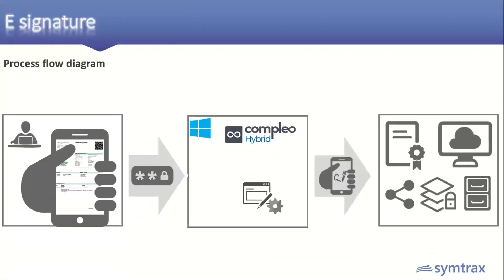Let's discuss another application: e-signature. This applies when you need real-time acknowledgement from a customer for goods or document delivery, or for HR recruiting — for example, when HR wants a signed document from a new joiner. HR simply processes the document from their desktop, the new joiner receives it over email, they sign it, and both parties receive the document for reference. Let's see a demonstration.